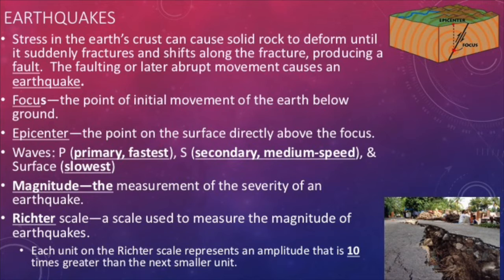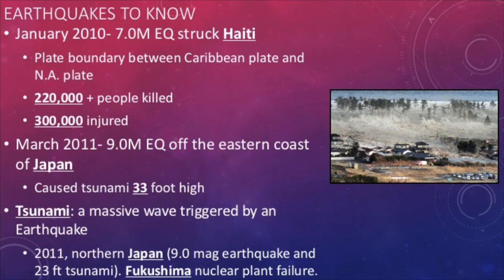We can determine how strong an earthquake is by measuring its magnitude based off of the Richter scale. The Richter scale ranges from one to ten, with one being fairly weak and ten being the strongest. Each step increased or decreased in the Richter scale is a change of ten times instead of just one. Famous earthquakes to know include the January 2010 7.0 magnitude earthquake that struck Haiti — it killed over 200,000 people and injured 300,000 more.